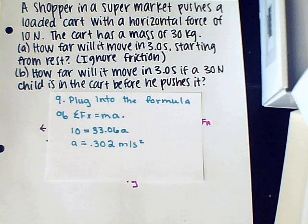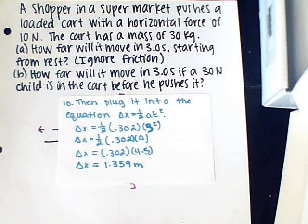You plug this into the formula of the sum of the forces in the x direction equals mass times acceleration, and solve that acceleration is equal to 0.302 meters per second squared. You then plug into the equation delta x equals 1 half at squared, and solve that the final delta x for part B is equal to 1.359 meters.